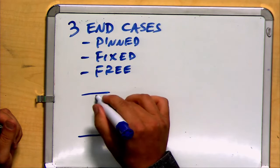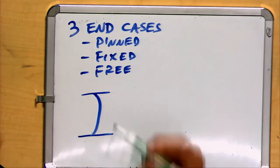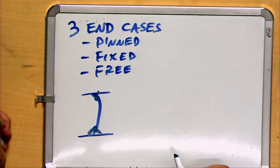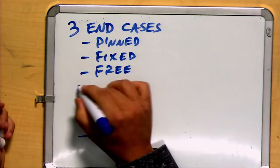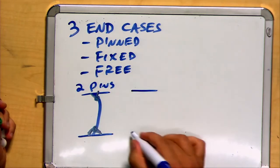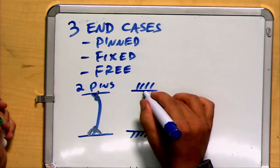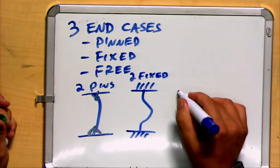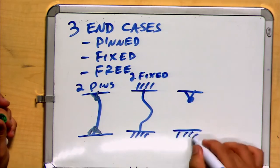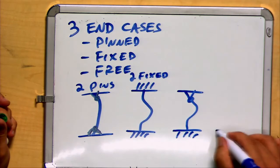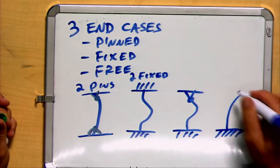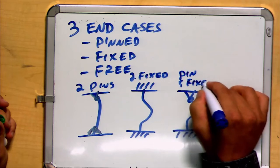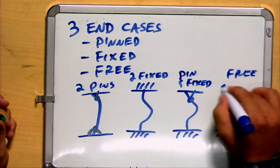Let's look at some combinations of these cases. Possible combinations, there is the pinned-pinned combination. Let me actually draw a pin on each end. This is a double-pinned combination. Two pins. We have the combination where both ends are fixed. Two fixed. We have the combination where one end is pinned and the other end is fixed. And then finally, the combination where one end is free and the other end is fixed. So this is pin and fixed and this one is free and fixed.